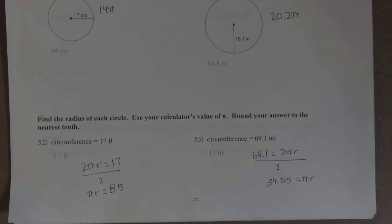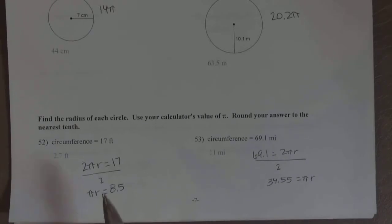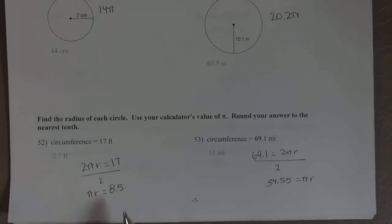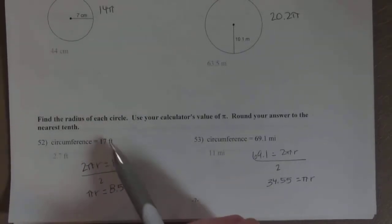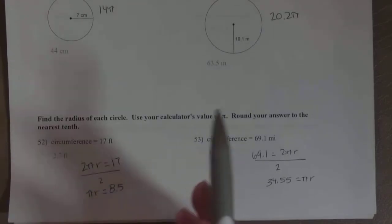These problems starting at 52 give you the circumference and want you to find the radius. This is my answer key, I don't have a blank one, so I already have the work written down. You'll take the 17 and set it equal to the formula for circumference, which is 2πr. To solve for the radius, you're going to divide by 2 and then divide by π.